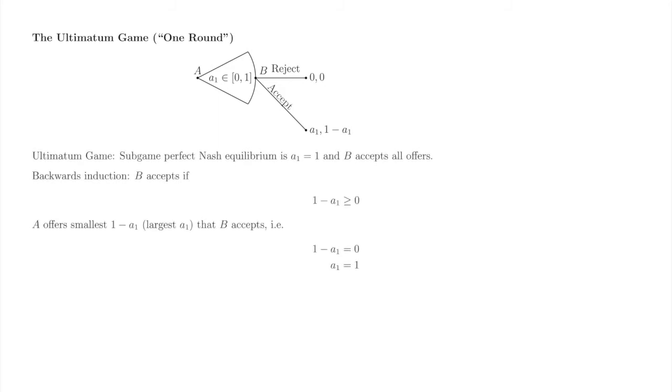The ultimatum game is the dictator game plus B's response to A's offer. B either accepts A's offer, in which case A receives A1 and B receives 1 minus A1, or else B rejects A's offer, in which case the game ends and both players receive 0. Now let's find the subgame perfect Nash equilibrium by backwards induction. B accepts if B's payoff from accepting, 1 minus A1, is at least as good as B's payoff from rejecting, 0.